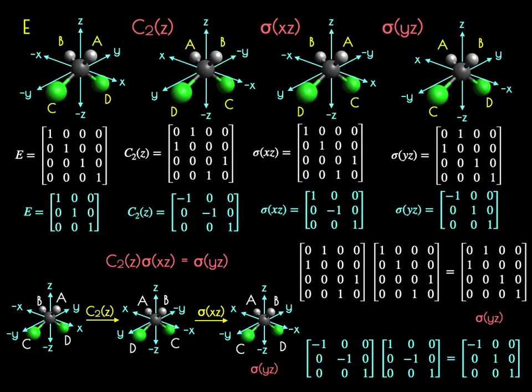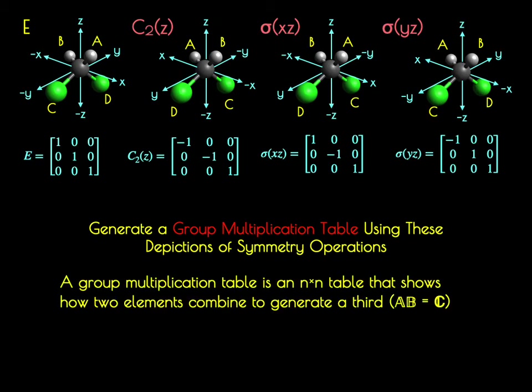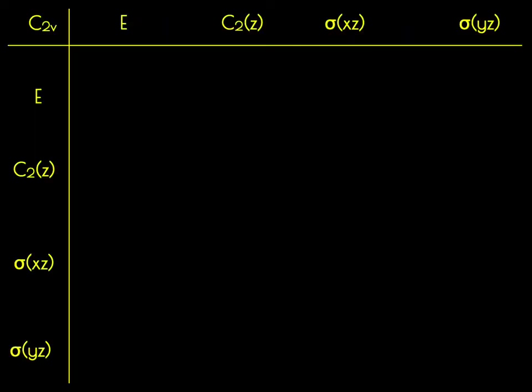We'll now use the visual method and the 3×3 matrices to generate group multiplication tables. A group multiplication table is an n×n table showing how two elements combine to generate a third — that AB equals C — similar to multiplication tables for whole numbers but using symmetry elements. We start by making an n×n table with symmetry elements in both the column and row positions. Note that these elements often do not commute, meaning order matters: A times B does not necessarily equal B times A.